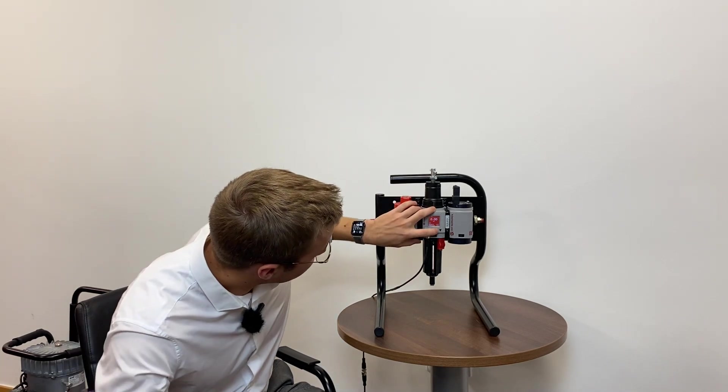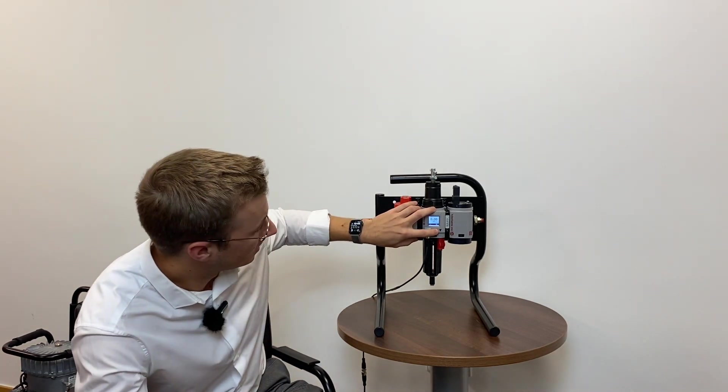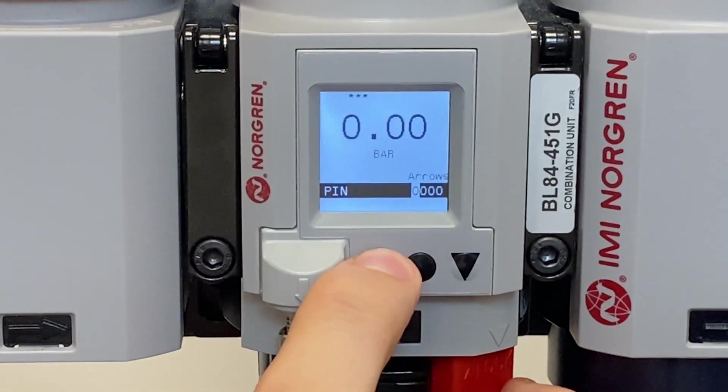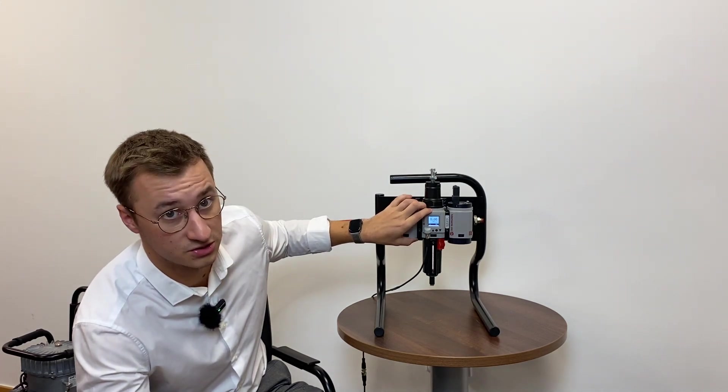So if I come in here and show you just how we can alter the tolerance and the set point. In order to make any changes, we long press for about a second this set button here, and that's going to flash up a white screen asking you for a PIN. You can change the PIN to whatever you like, and this just prevents anyone from tampering with the desired pressure.